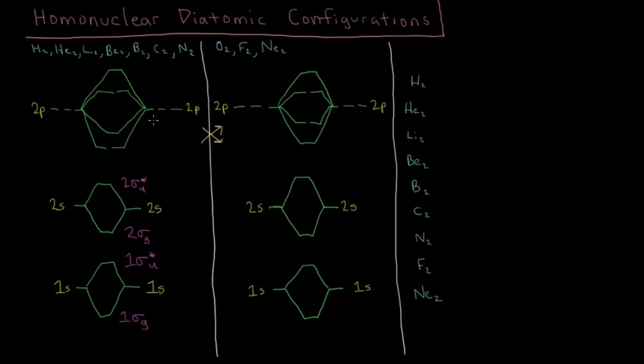Then with our 2p orbitals, we saw how the px and py work differently when they overlap than the pz. The pz forms this orbital up here, which is going to be our 3σg. And then its antibonding orbital is going to be the 3σg*u.